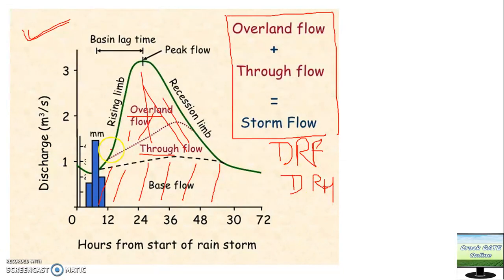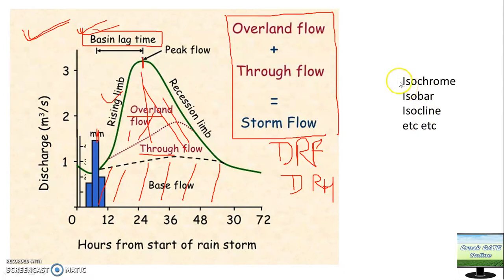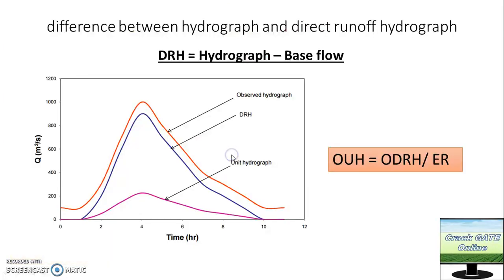The time from the peak of rainfall to the peak of the hydrograph is known as the lag time. The formula for this I will show in a later part. Please tell me in the comment section: what is an isochrone? Please remember definitions like isochrone, isobar, isocline, and many other 'iso' definitions, because they can be asked in objective-type questions.